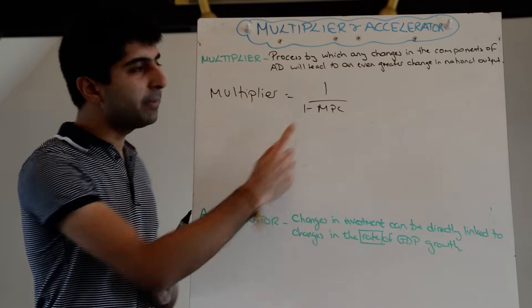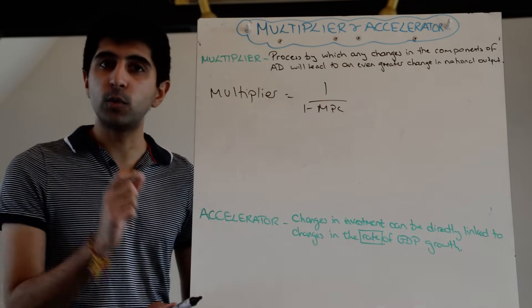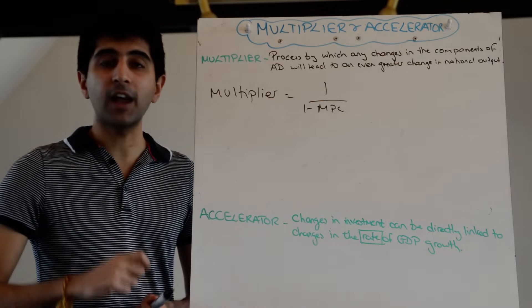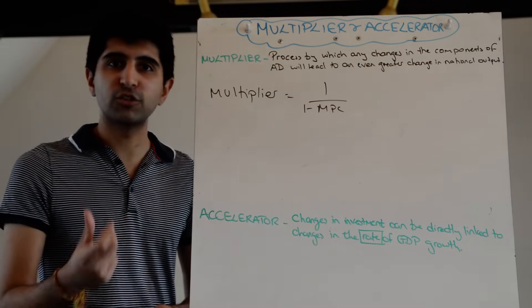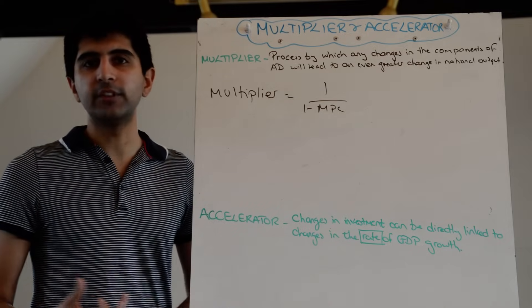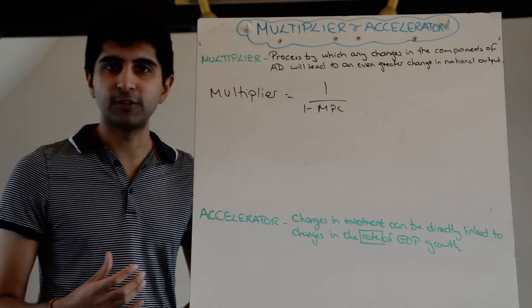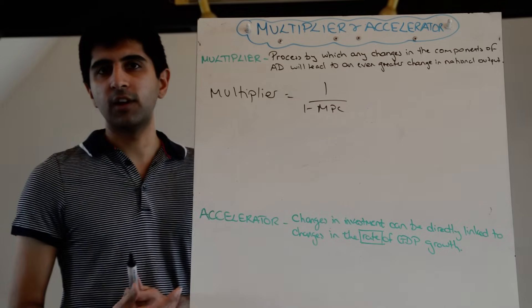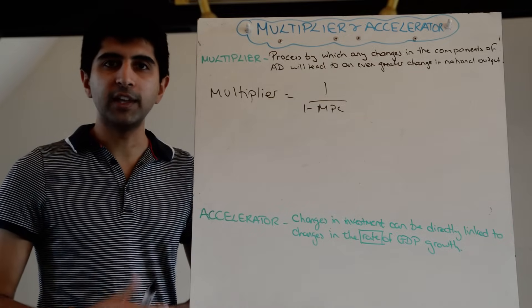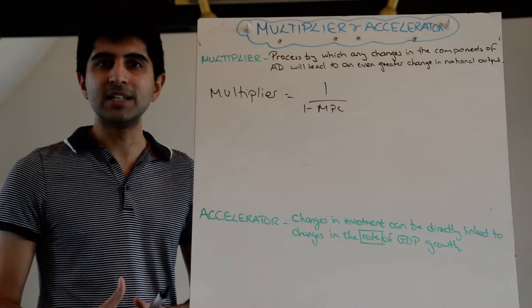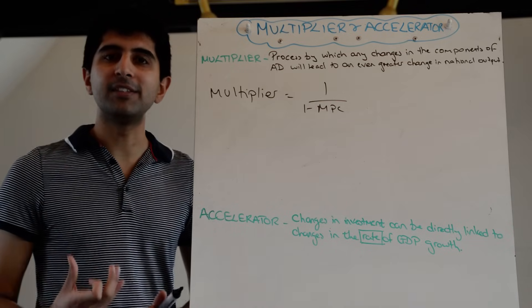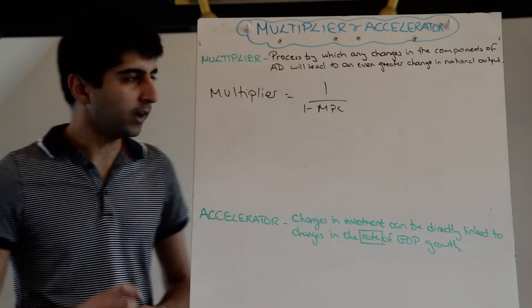The MPC can take a range of values between 0 and 1, where 1 represents 100% of that extra pound being spent, and 0 means none of that extra pound is being spent. So if I gain an extra £50 worth of income and I decide to spend £25 of that extra income, my MPC would be 0.5.